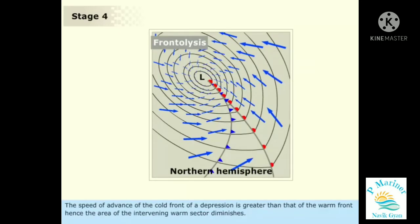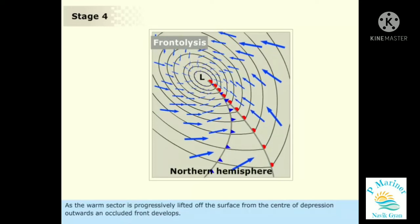The speed of advance of the cold front of a depression is greater than that of the warm front, hence the area of the intervening warm sector diminishes. As the warm sector is progressively lifted off the surface from the center of depression outwards, an occluded front develops.